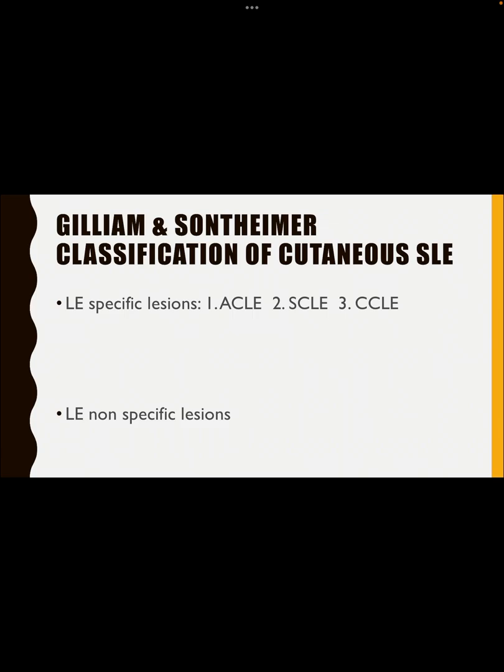In LE-specific lesions, there are three types. Number one, ACLE — acute cutaneous lupus erythematosus. Number two, SCLE — subacute cutaneous lupus erythematosus. Number three, CCLE — chronic cutaneous lupus erythematosus. Among these, which is the most common type? ACLE — acute cutaneous lupus erythematosus — is the most common type.